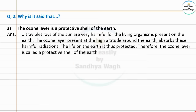Answer: The ultraviolet rays of the sun are very harmful for the living organisms present on the earth. The ultraviolet rays coming from the sun are very harmful — they are dangerous for all living things on the earth.